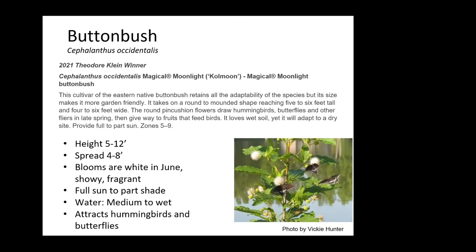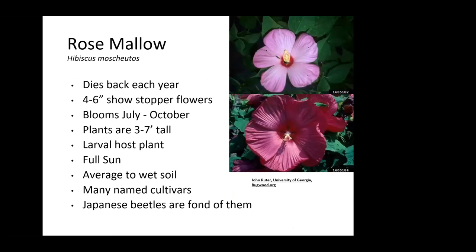Rose mallow is a really neat flower that's actually native — it looks like it belongs in Hawaii. It does die back to the ground each year but comes back. They bloom July through October with these giant flowers, and there are all kinds of cultivars so you can get shorter or taller ones. It is a larval host plant, takes full sun, average to wet soil. Japanese beetles do like them, so I usually have to spray something on them every year.